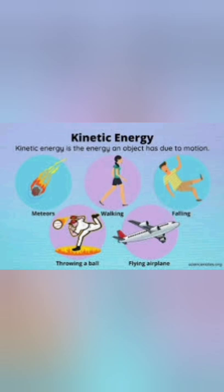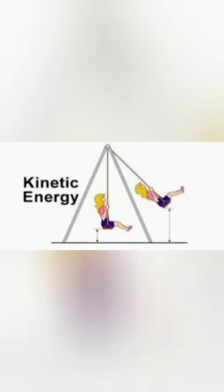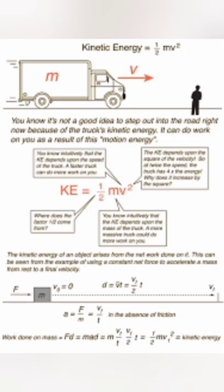Kinetic energy is the energy an object possesses due to its motion, and can be calculated from the amount of work required to accelerate the body from rest to its current speed. There is a simple formula which states that kinetic energy is equal to half times mass times velocity squared.